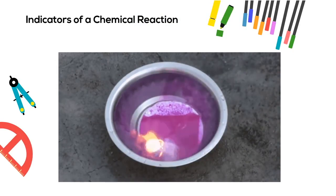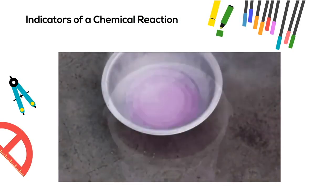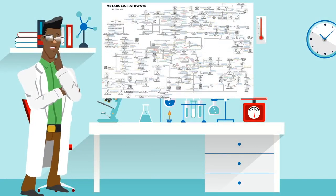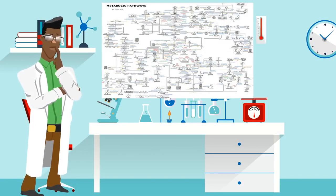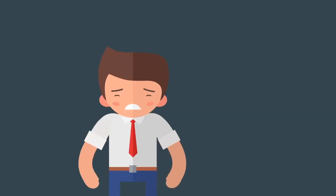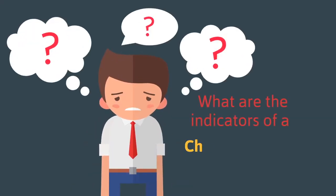Indicators of a chemical reaction. Life depends on chemical reactions. Here is a diagram of all the chemical reactions that take place in your body. Some chemical reactions, like this one taking place right now, are obvious. Others are not. So what are the indicators of a chemical reaction?